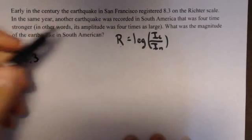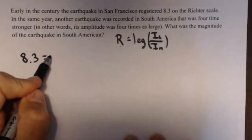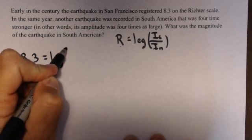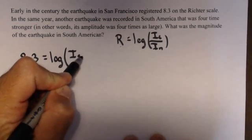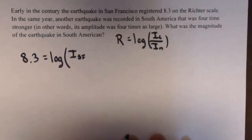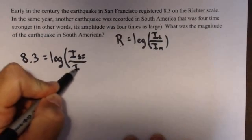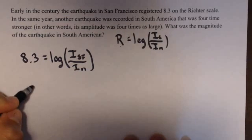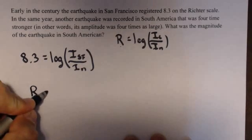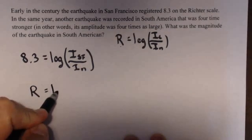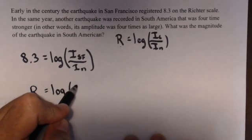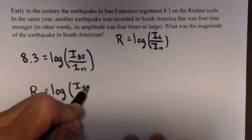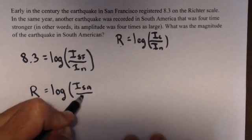Now, we also have South America. We don't know what it was on the Richter scale, that's actually what we're looking for, so let's just call that R, and that's equal to the log of I_SA over I_n.